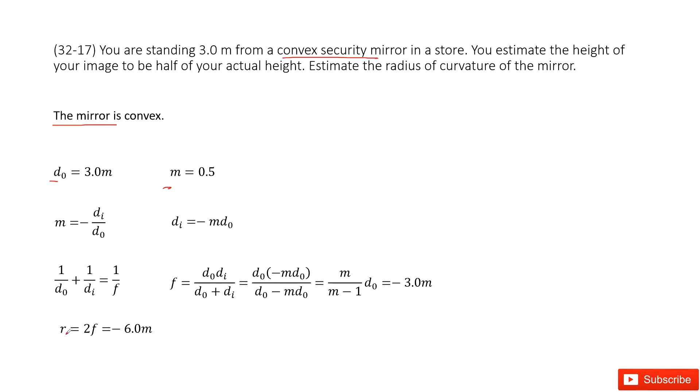For a convex mirror, r equals 2 times f, where f is the focal length. From this equation, we can connect the object distance, image distance, and focal length in one equation.